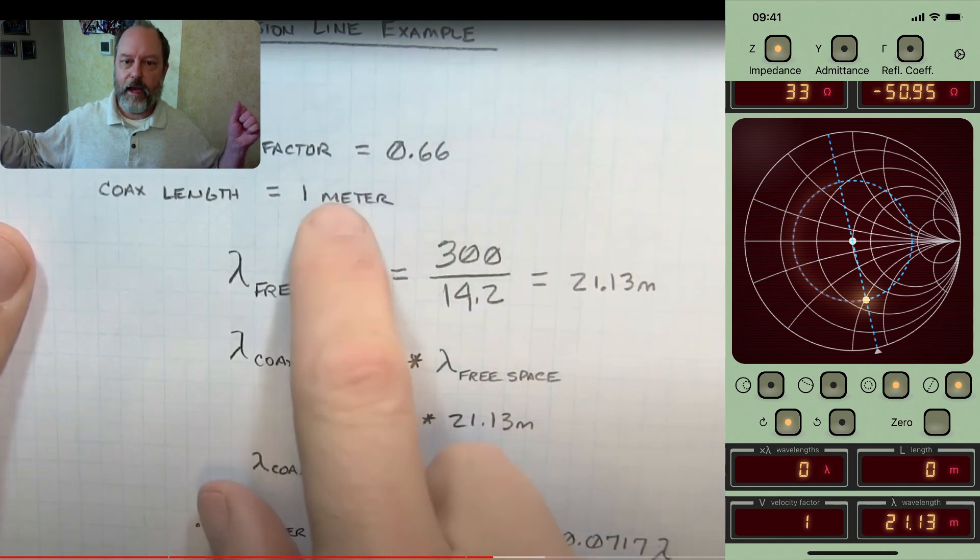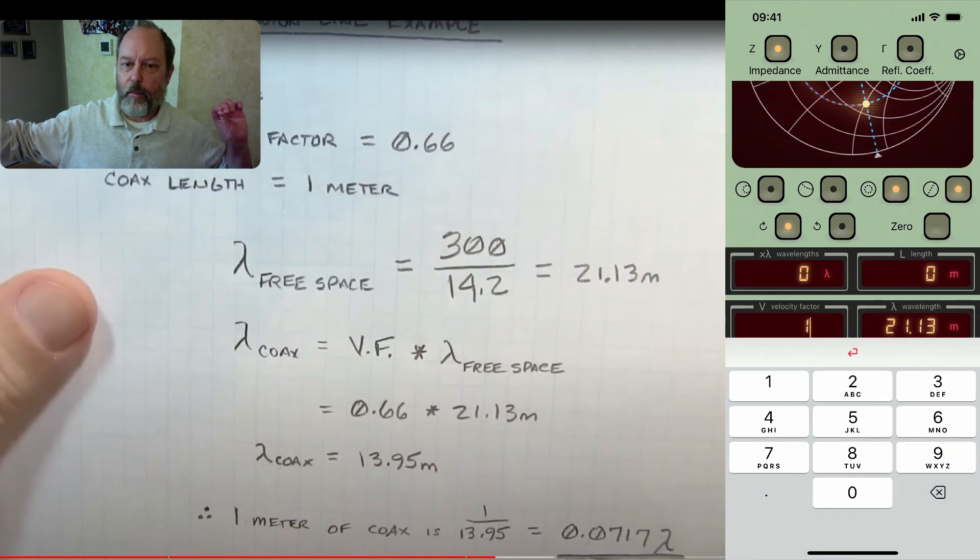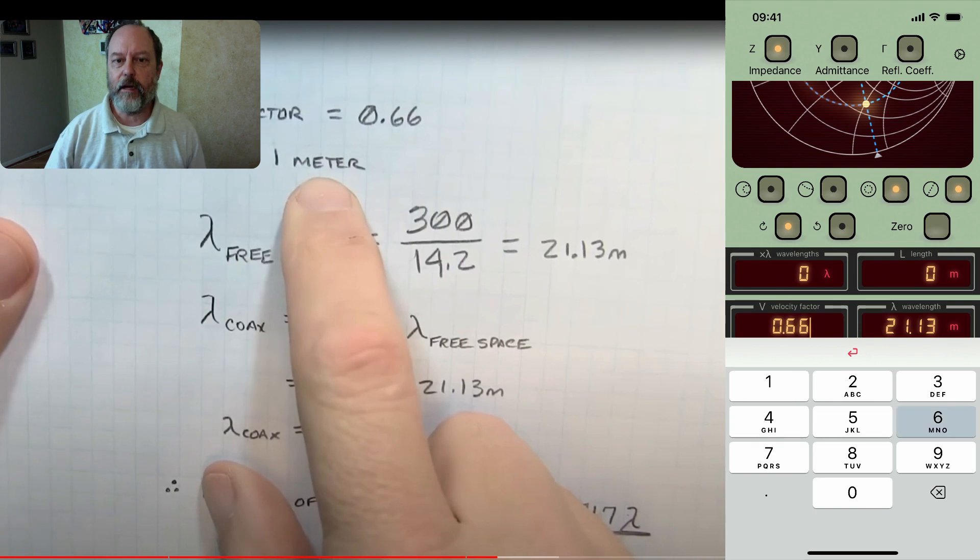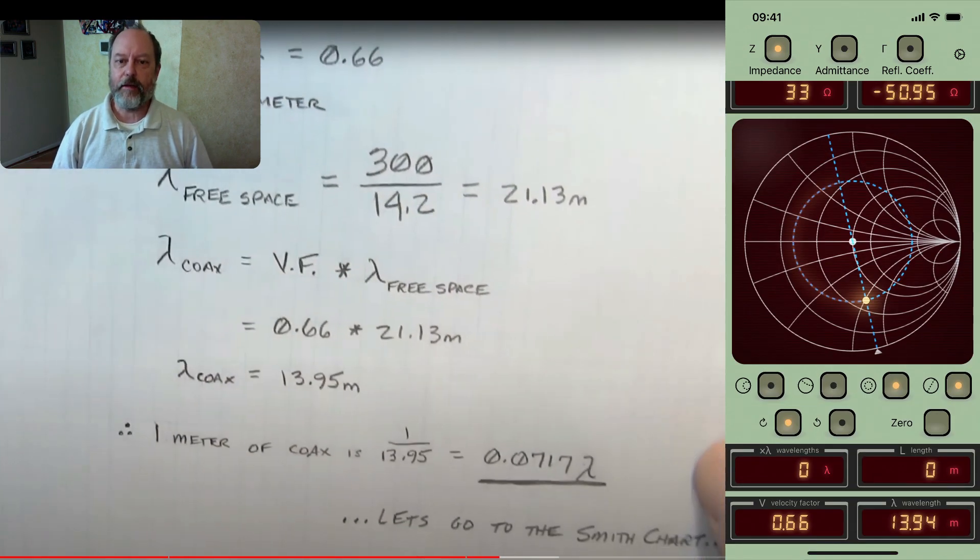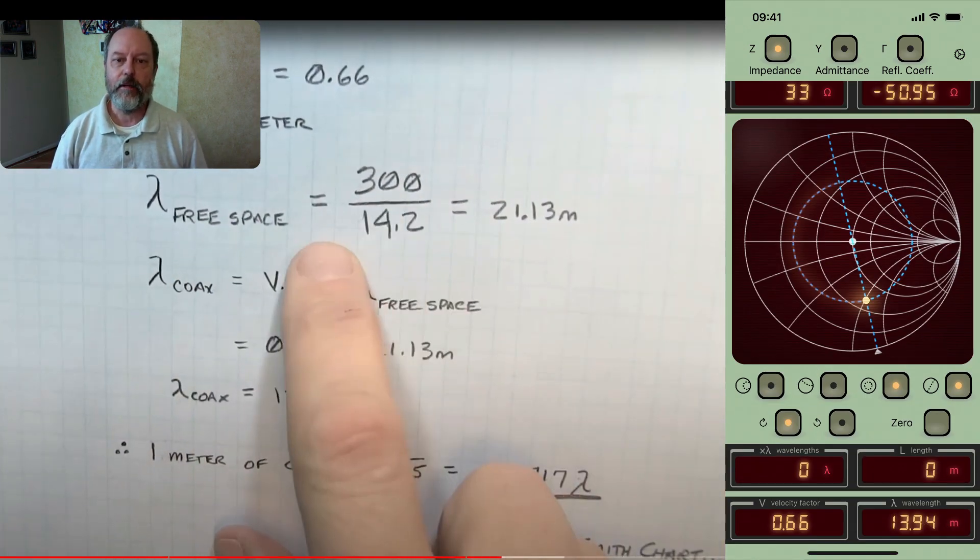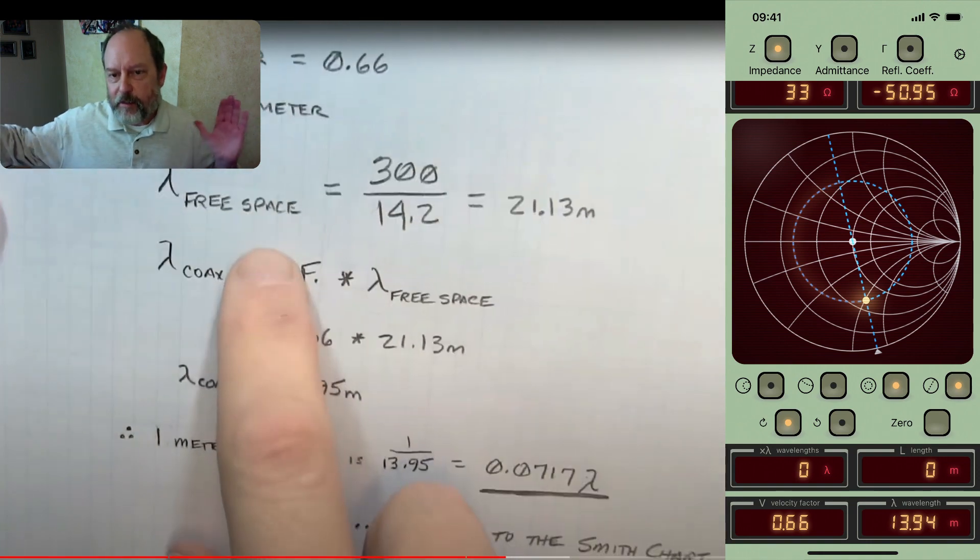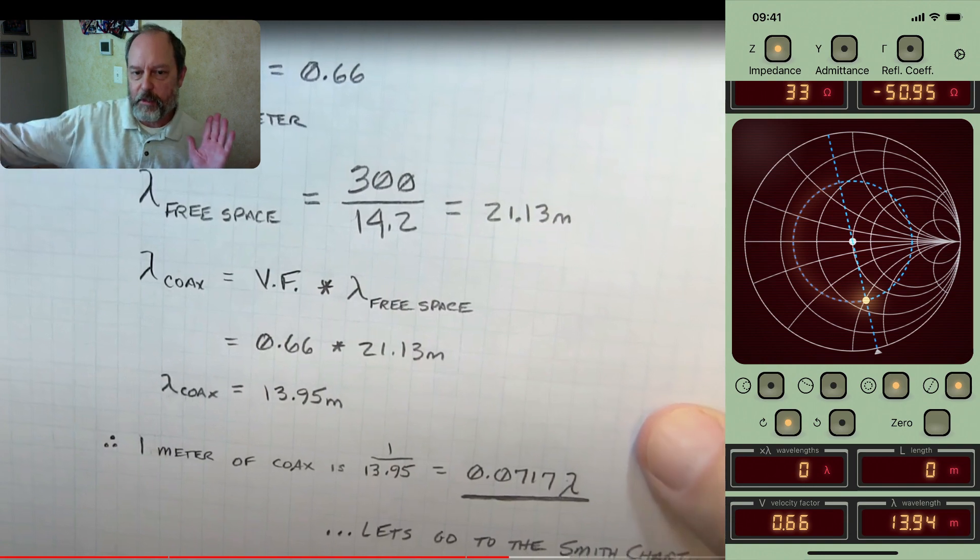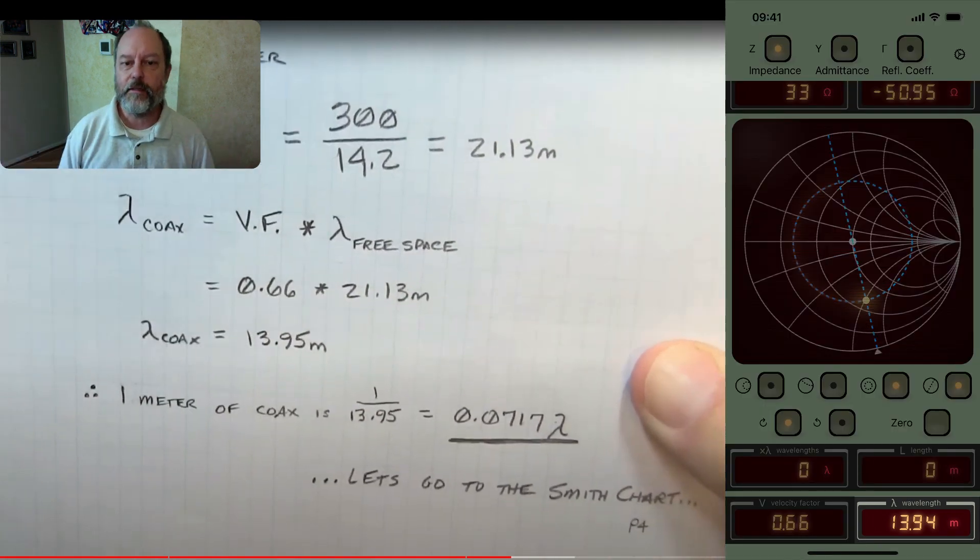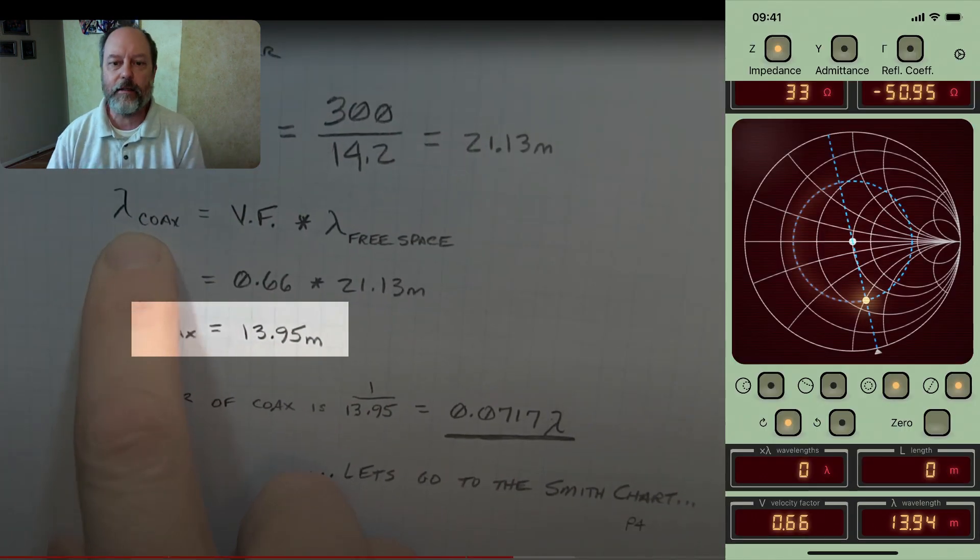Alan is using coax that happens to have a velocity factor of about 0.66 and that's what he used in his calculations. So we'll go ahead and enter that same velocity factor into the app. And we can see its effect on the wavelength. Since propagation is slower in the coax, the wavelength is actually shortened to 13.94 meters, matching the 13.95 that Alan calculated.